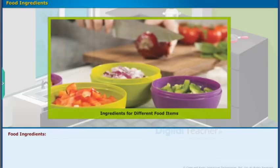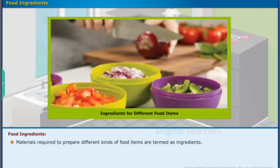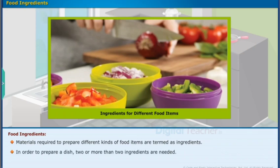Food ingredients: Materials required to prepare different kinds of food items are termed as ingredients. In order to prepare a dish, two or more than two ingredients are needed.